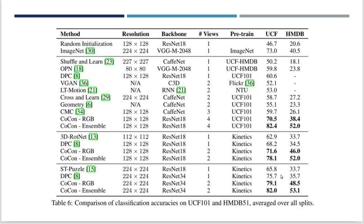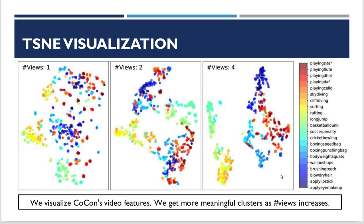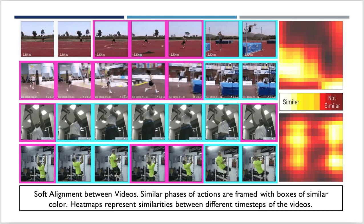And that's pretty much it. Here are some qualitative experiments showing that the clusters learned through COCON are much more efficient. On the left we see single-view training; on the right, much more meaningful clusters — instances with similar colors lie in similar places. We also notice that we can perform alignment of videos purely because of our good representations, seeing periodicity in pull-ups and other interesting things. Thank you for your time.